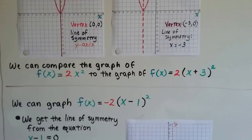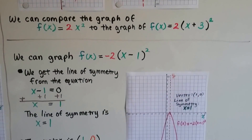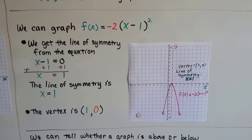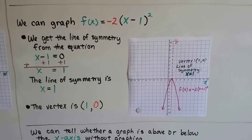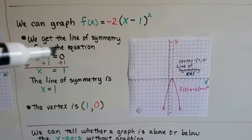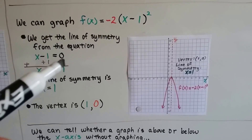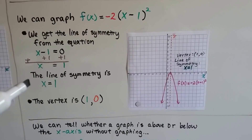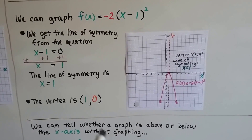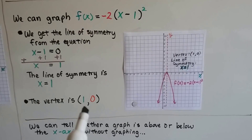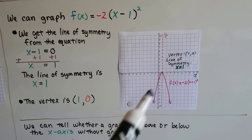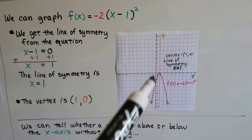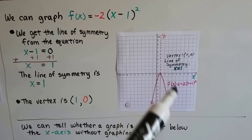We can graph f(x) equals negative 2 times the square of the quantity (x minus 1). We get the line of symmetry from the equation: x minus 1 equals 0, so x equals 1. The line of symmetry is x equals 1 and the vertex is (1, 0). The parabola opens downward.